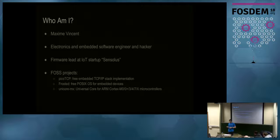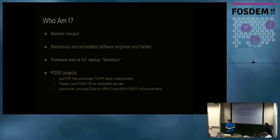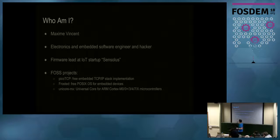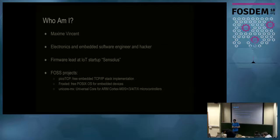Another project is Frosted, which is a POSIX implementation for very small embedded devices — it's like running a small Unix on Cortex-M class devices. This project also uses the Pico-TCP project to have full TCP/IP connectivity. Another project is Unicore-MX, which is a universal core library with support for clocks, peripherals, UART, etc., also for the Cortex-M class of devices. These three projects kind of go together.